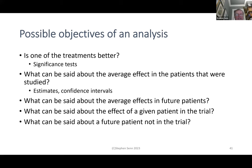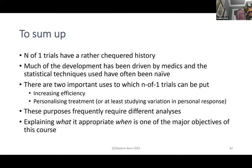Some possible objectives of analysis: Is one of the treatments better? What can be said about the average effect in the patients studied? What can be said about the average effect in future patients? What can be said about the effect in a given patient in the trial? What can be said about a future patient not in the trial? These are all different questions requiring different analyses. To sum up: end-of-one trials have a rather checkered history. Much of the development has been driven by medics and the statistical techniques used have often been naive. There are two important uses — increasing efficiency and personalizing treatment — which frequently require different analyses. Explaining what is appropriate when is one of the major objectives of this course.